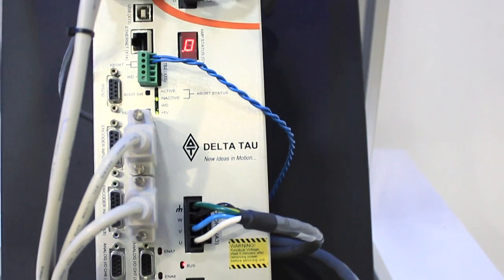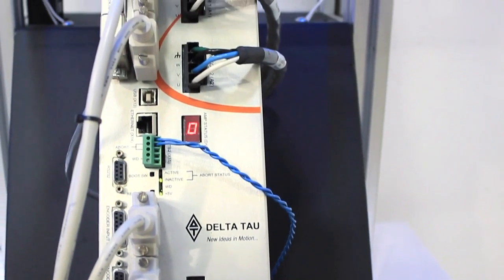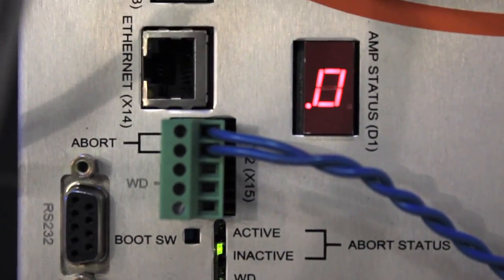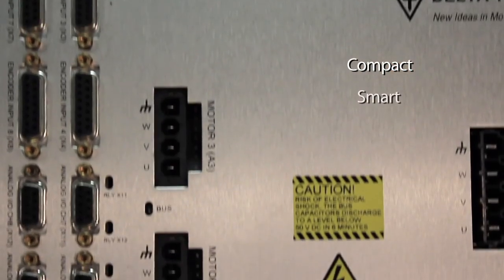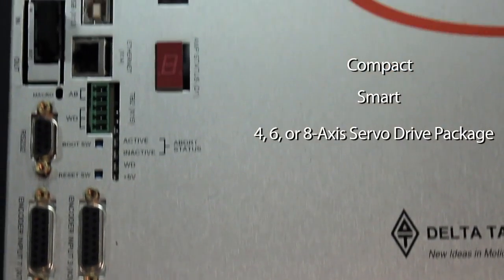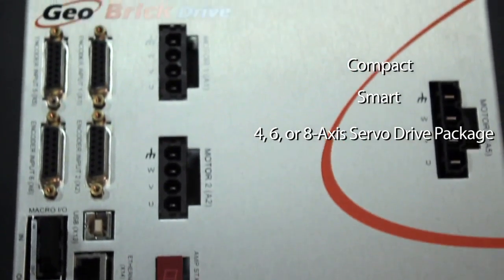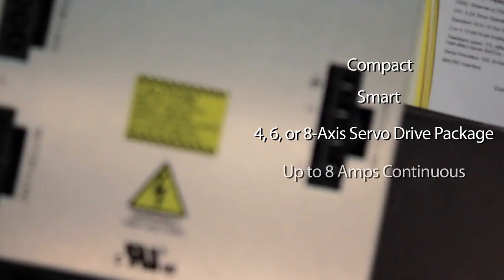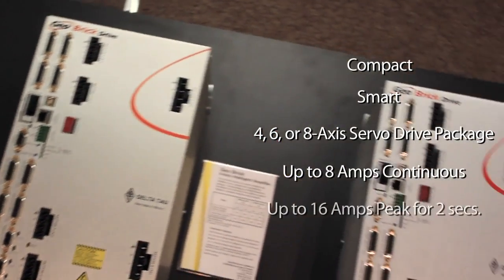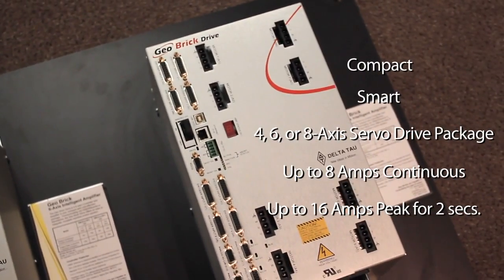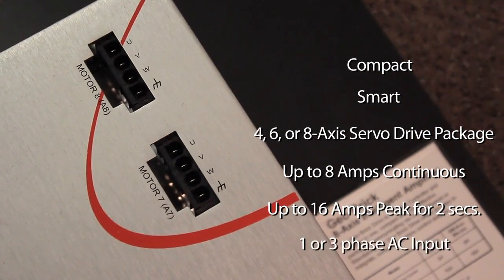The intelligent amplifier driving this Delta robot is the Geobrick drive, which combines the intelligence and capability of the Turbo PMAC 2 controller with IGBT-based drive technology, resulting in a compact, smart, 4-, 6-, or 8-axis servo drive package with a power stage supporting up to 8-amps continuous and 16-amp peak for 2 seconds when running on a 1- or 3-phase AC input.